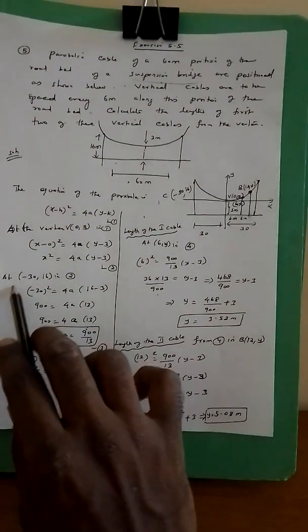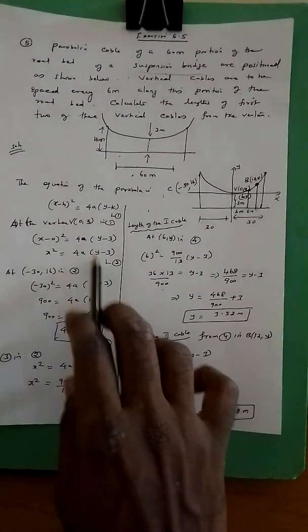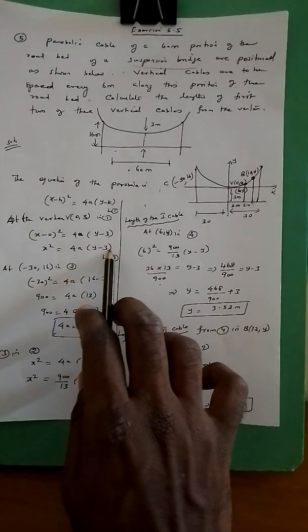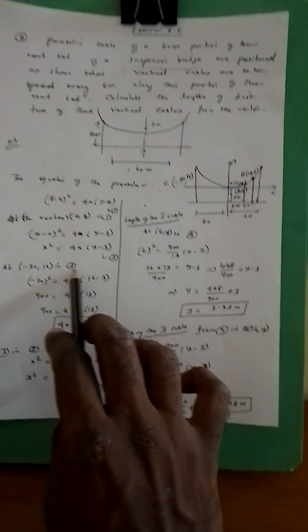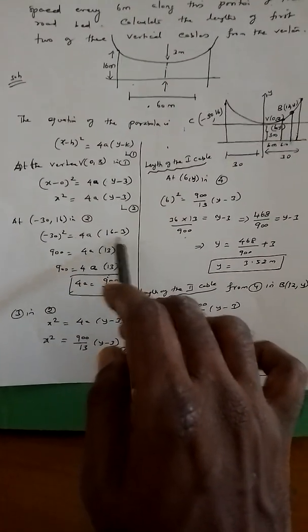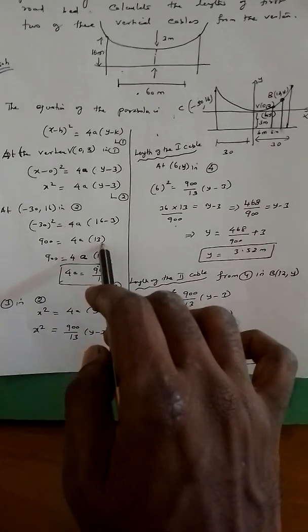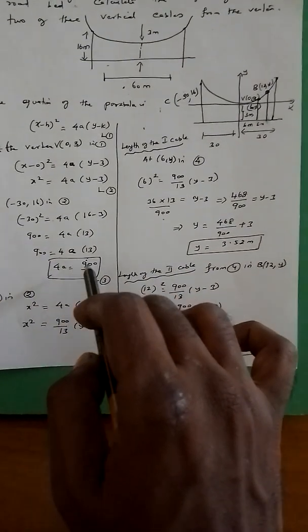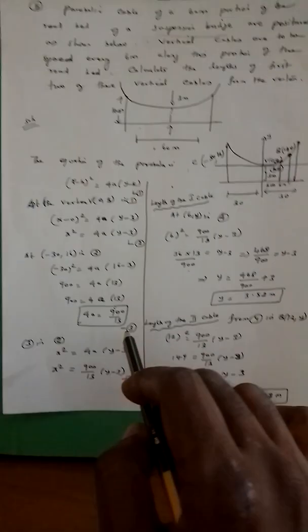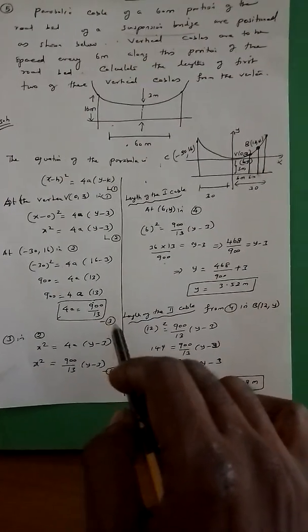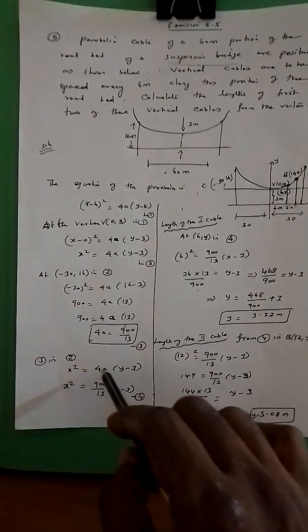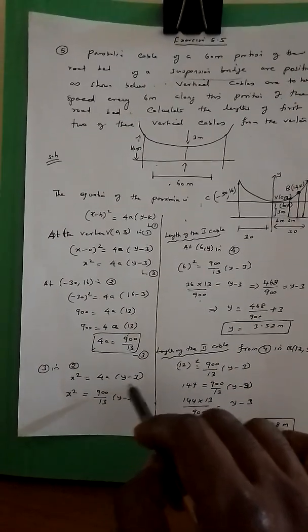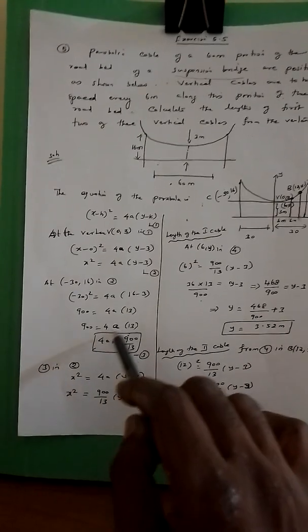So, substituting the point into the equation: x² = 4a(y − 3). We add the point to the equation, giving x² = 4a(y − 3).